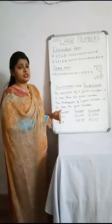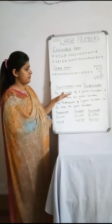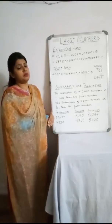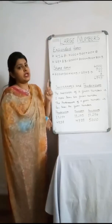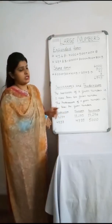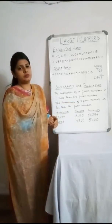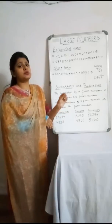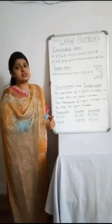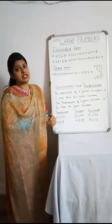Now we move on to successors and predecessors. The successor of a given number is one more than the given number. For example, the successor of nine is ten. The predecessor of a given number is one less than the given number. To find a predecessor, subtract one from the number. For example, the predecessor of twelve is eleven.